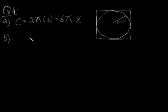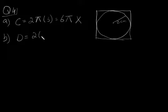So 6π is an irrational number. In part B, it asks for the diameter of the circle. The diameter is 2r, which is 2 times the radius of 3, so the diameter is 6, which is a rational number.